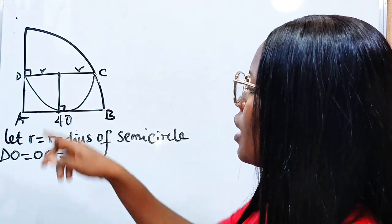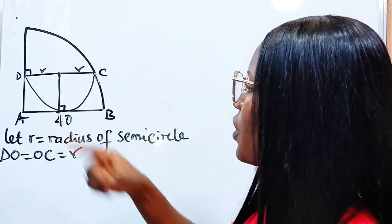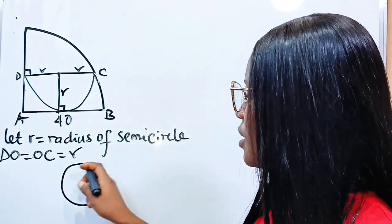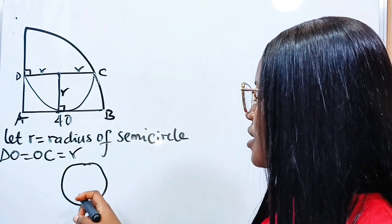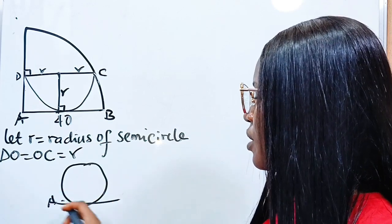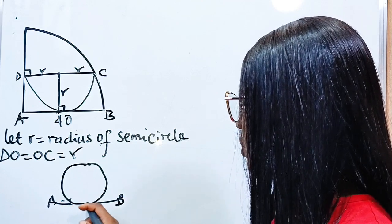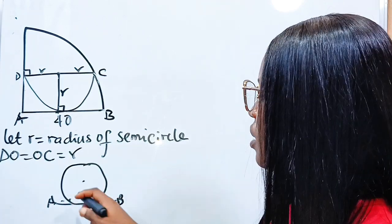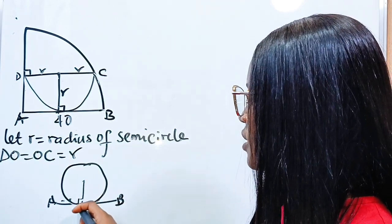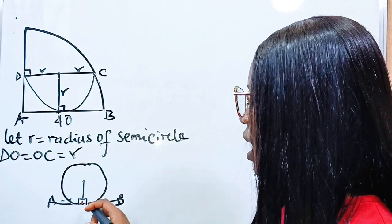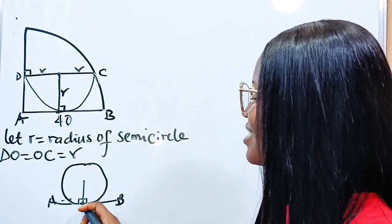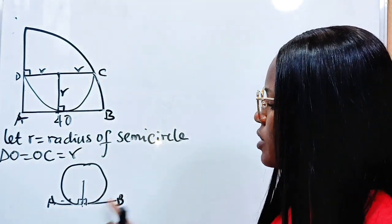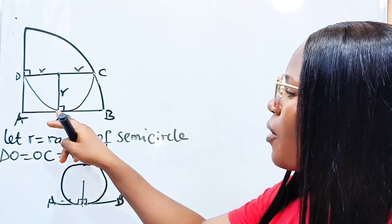Why? Because AB is a tangent to this semicircle at this point. From center of this semicircle to this point is r, the radius. Using this circle theorem: if you have a tangent AB and this is the center of the circle, the radius touching the tangent at each point of contact gives 90 degrees at the point of connection.